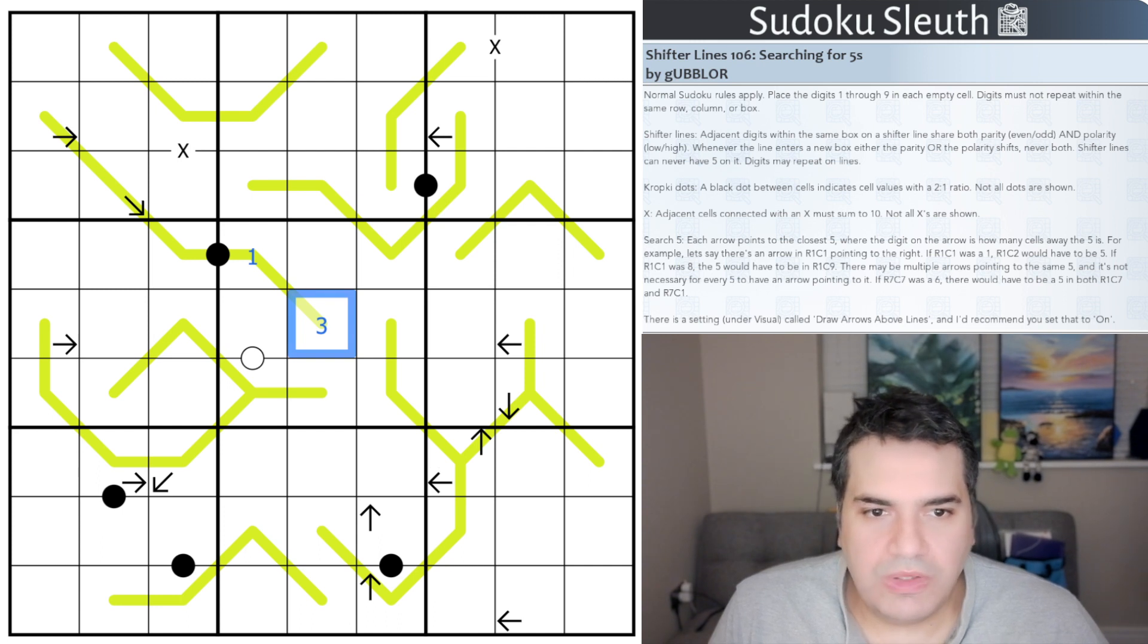Now, whenever the line enters a new box, either the parity or the polarity shifts, but never both. And one more thing, the shifted lines can never have a five on it, and digits may repeat on lines. So let's take this one as an example. As I enter this box in here, I need to change something. So either polarity or parity, but not both. So one option, for example, is I can go, well, let's change parity, but stay low.